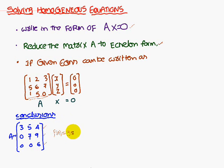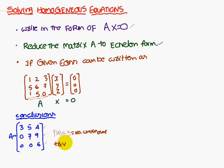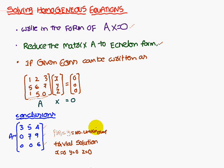If the rank of A equals the number of unknowns — which is 3 — then the system has a trivial solution. Trivial solution means x equals 0, y equals 0, z equals 0. When the rank of A equals the number of unknowns, you get only the trivial solution.